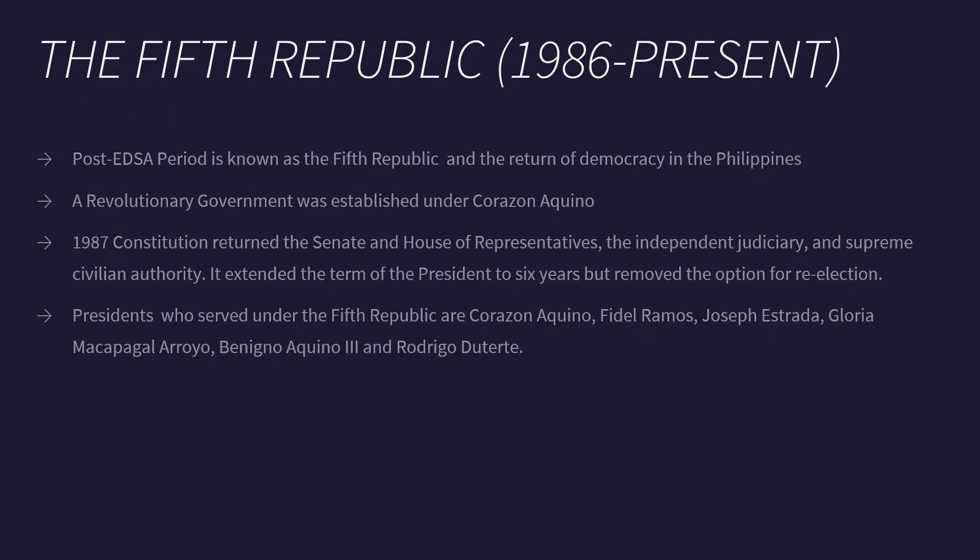The Fifth Republic is from 1986 to the present. The post-EDSA period is known as the Fifth Republic and the return of democracy in the Philippines. A revolutionary government was established under Corazon Aquino after the People Power Revolution. The 1987 Constitution returned the Senate and the House of Representatives, the independent judiciary, and supreme civilian authority. It extended the term of the president to six years but removed the option for re-election. It also included that any declaration of martial law must be approved by the Senate and Congress. The presidents who served under the Fifth Republic are Corazon Aquino, Fidel Ramos, Joseph Estrada, Gloria Macapagal-Arroyo, Benigno Aquino III, and Rodrigo Duterte.